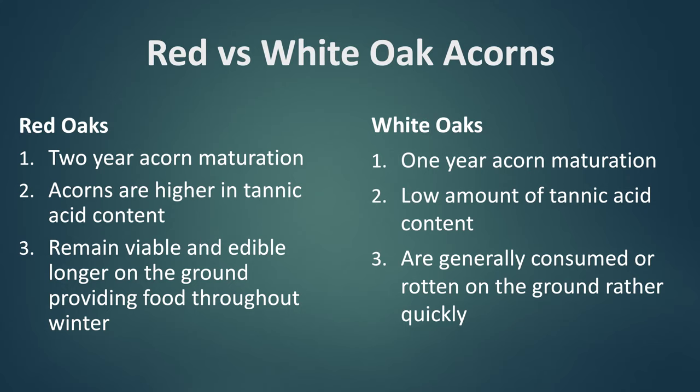The two-year maturation of red oaks is ecologically advantageous — in a very dry spring when white oak acorn production declines significantly, red oaks are still producing because they already have acorns that have gone through one solid growing season. White oak acorns are the preferred choice for deer, turkey, and squirrels over red oaks. Red oaks are higher in tannic acid, which makes them less palatable but also means they stay viable on the ground longer, while white oak acorns tend to rot more quickly.